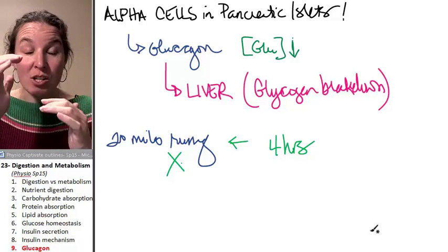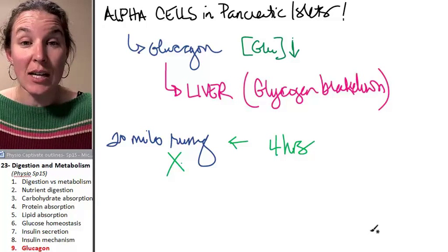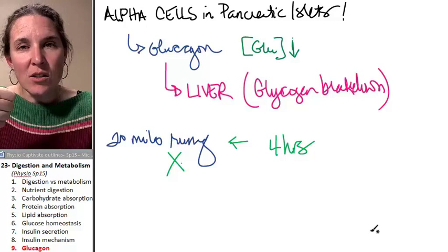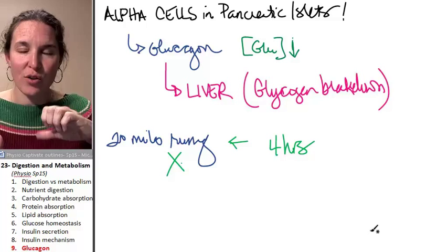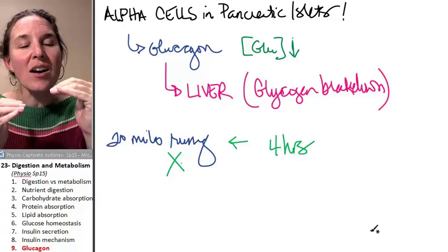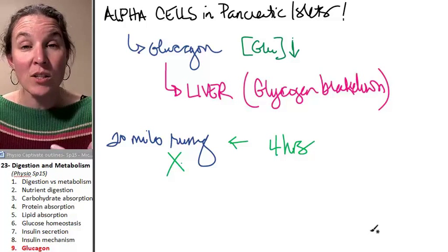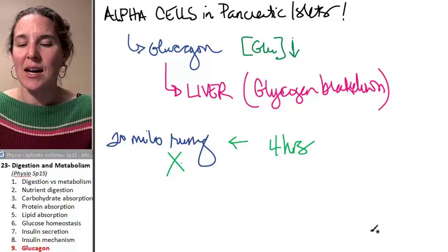This is a fantastic example of homeostasis because glucagon is going to raise glucose concentrations. Insulin is going to decrease glucose concentrations. They're constantly being produced in just little amounts based on what's going on in the blood, glucose-wise. How fantastic is that?